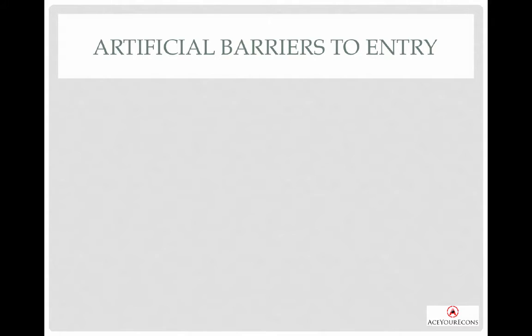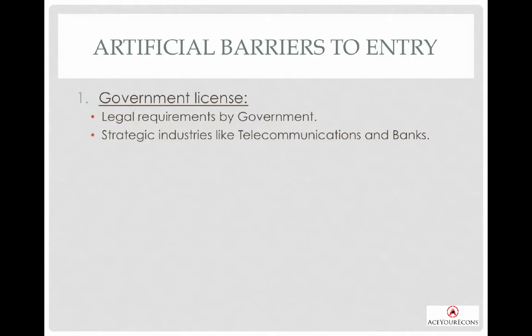Let's quickly look at barriers to entry. When we talk about artificial barriers to entry, we are talking about man-made barriers. An example of man-made barriers to entry would be government licenses — there are certain firms that require government licenses to operate, for example telecommunications and banks.